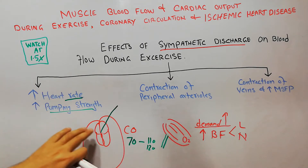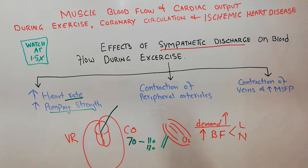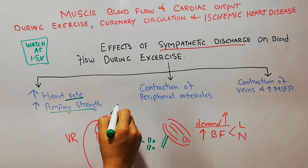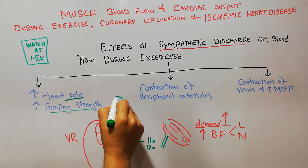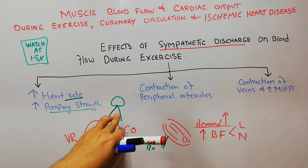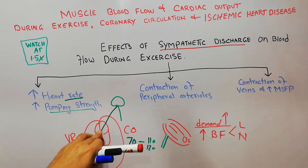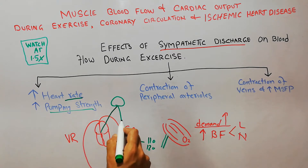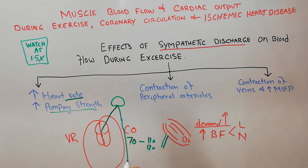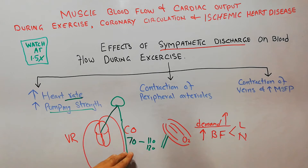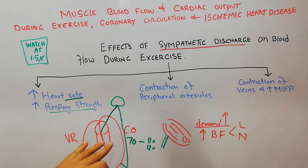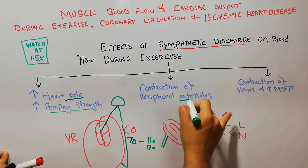While these changes happen at the level of the heart, the sympathetic nerves coming from the brain not only innervate the heart but also innervate the blood vessels — the arteries and the veins, and most importantly the arterioles.